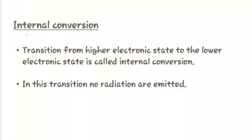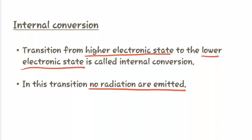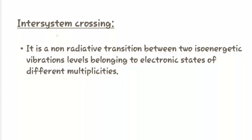The next term is internal conversion — transitions from the higher electronic state to the lower electronic state are called internal conversion. In this transition, no radiations are emitted. The last term is inter-system crossing: it is a non-radiative transition between two iso-energetic vibrational levels belonging to electronic states of different multiplicities.